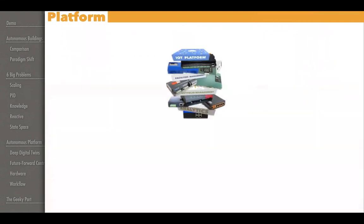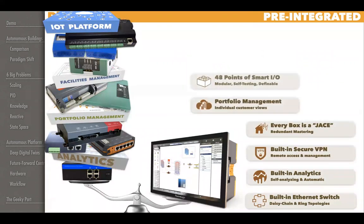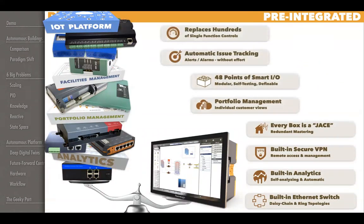From their point of view, it's a matter of how do we pre-integrate these different components into one package. Today we call ourselves integrators, and that's because that's where all the work is. Back to your iPhone — one of the things that's really interesting is that it was just pre-integrated. You no longer had to put together your computer, install the software, and get it up and going. You just literally buy it and it just works. And that's how building automation should be.